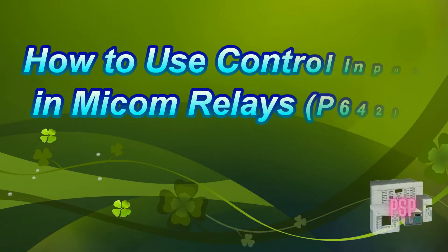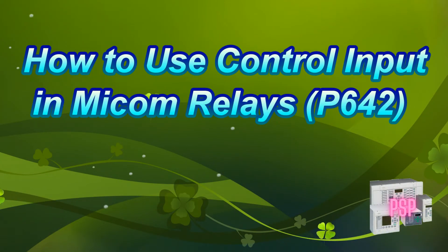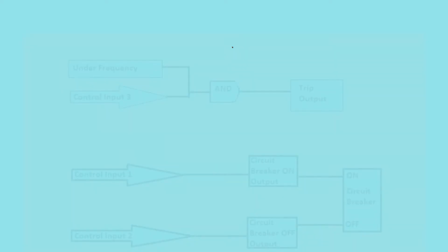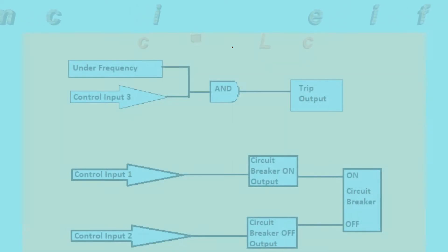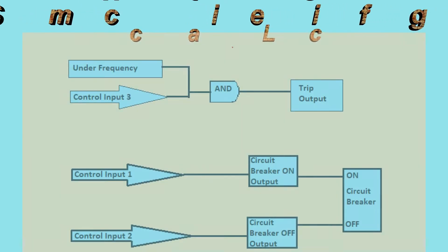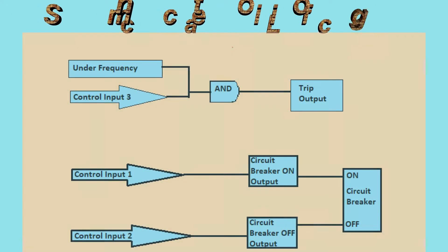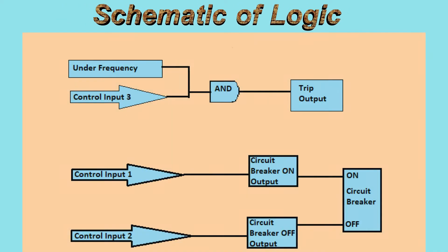Welcome to my channel PSP Protek. Today we will see how to configure control inputs in MiCOM relays. We have a P642 relay and today we will design two logics: one is to take the under frequency element tripping output, and another is the breaker control. For breaker control we will use control input one and two — one for on and two for off — and control input three will be used to enable or disable the tripping output of the under frequency relay.